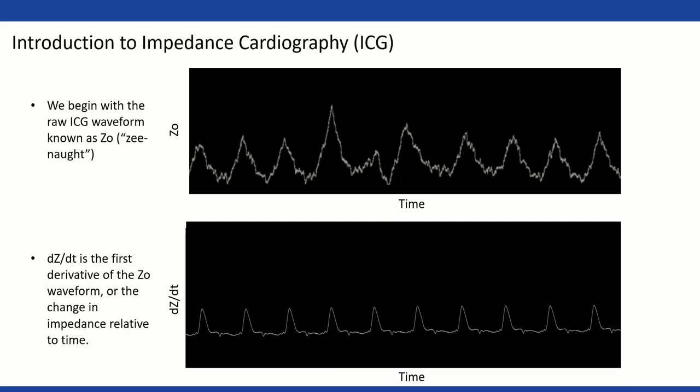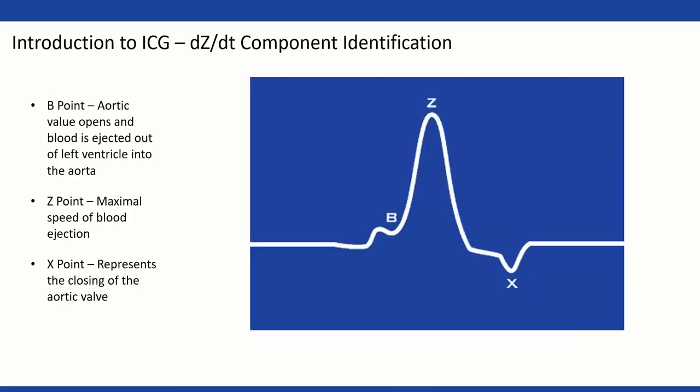At the top we have our Z0 — the raw impedance waveform. People call it a few different things but it's pronounced Z-zero. We don't do too much with it directly. What we actually work with is the derivative — the dz/dt — which looks at that Z0 waveform changing over time. That's the distance relative to time, and that's what we'll actually be analyzing and editing.